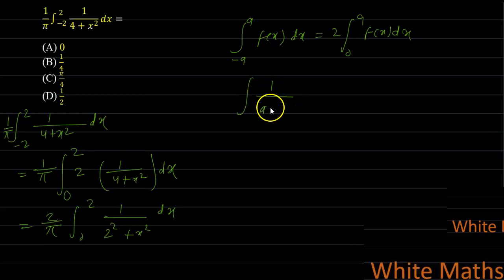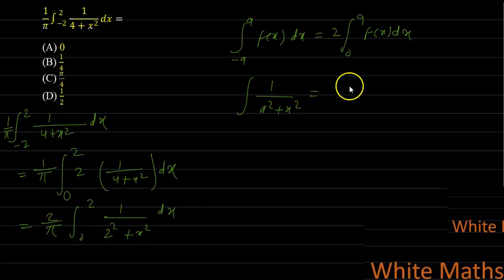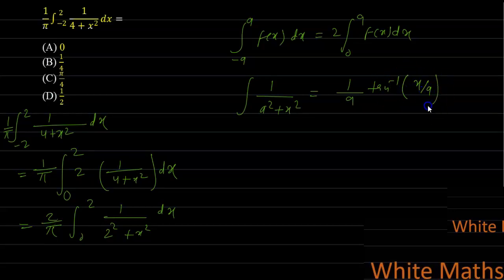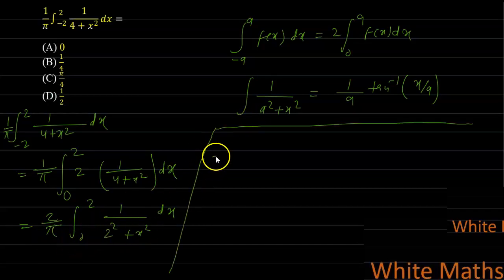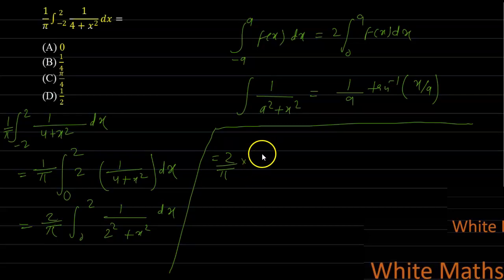To solve further, apply the standard integral property: ∫ 1/(a²+x²) dx = (1/a) tan⁻¹(x/a). Here a = 2, so this integral becomes (2/π) times (1/2) tan⁻¹(x/2), evaluated from 0 to 2.